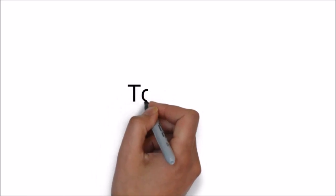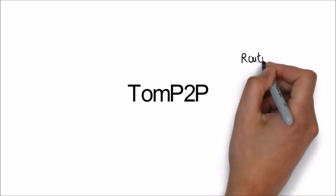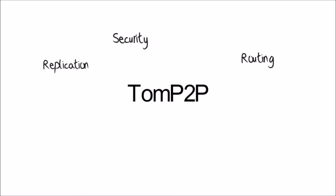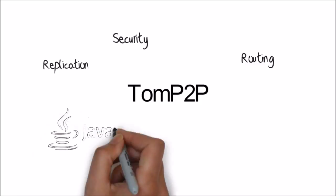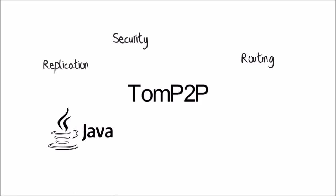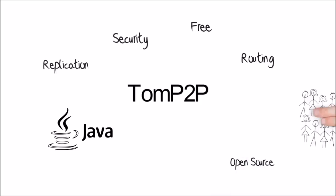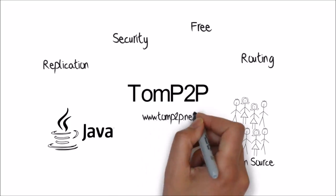So, what is TomP2P? TomP2P is an implementation of such a distributed hash table. The framework offers features like routing, replication, and security aspects, allowing you to build your own peer-to-peer application. TomP2P is written in the cross-platform language Java, so your application can run on all kinds of different devices. And the best of all, TomP2P is free and open-source. Join our community — take a look at our website and just start to build your own peer-to-peer application.